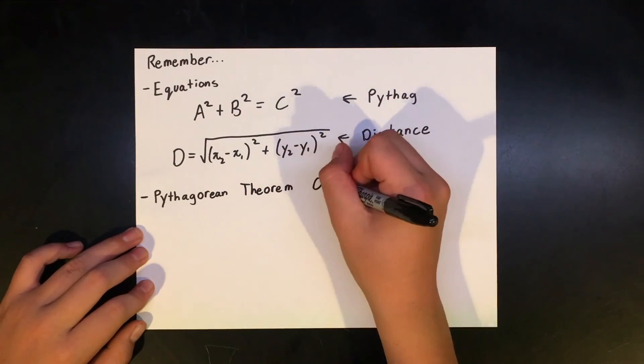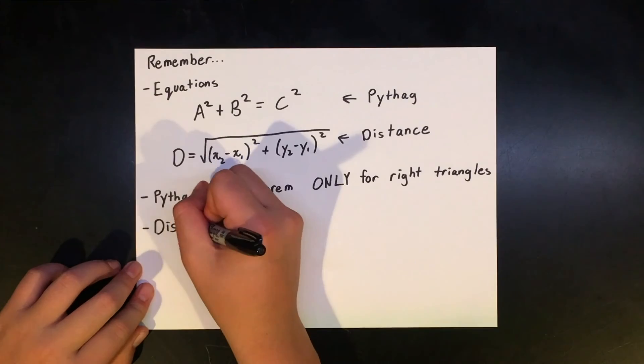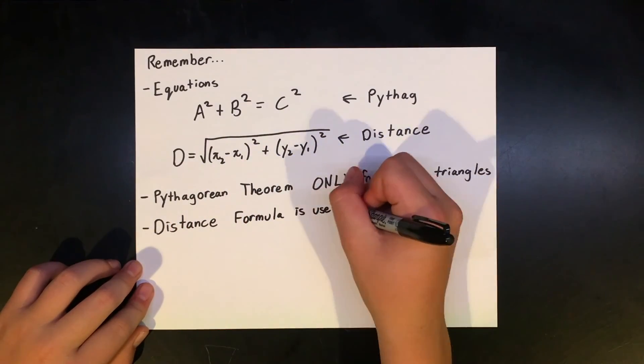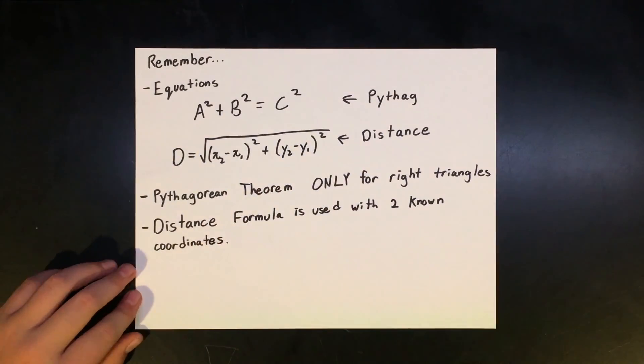Also remember that Pythagorean theorem is only used for right triangles, and distance formula is used with two known coordinates. Overall, these two topics aren't too bad.